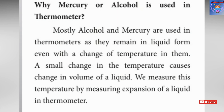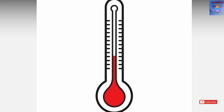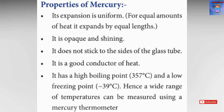The liquid substance used is either alcohol or mercury. So what are the properties of mercury? Mercury is the most commonly used substance. If mercury is in the thermometer and the temperature rises, the mercury level rises equally. It is opaque, but it is shiny and visible.